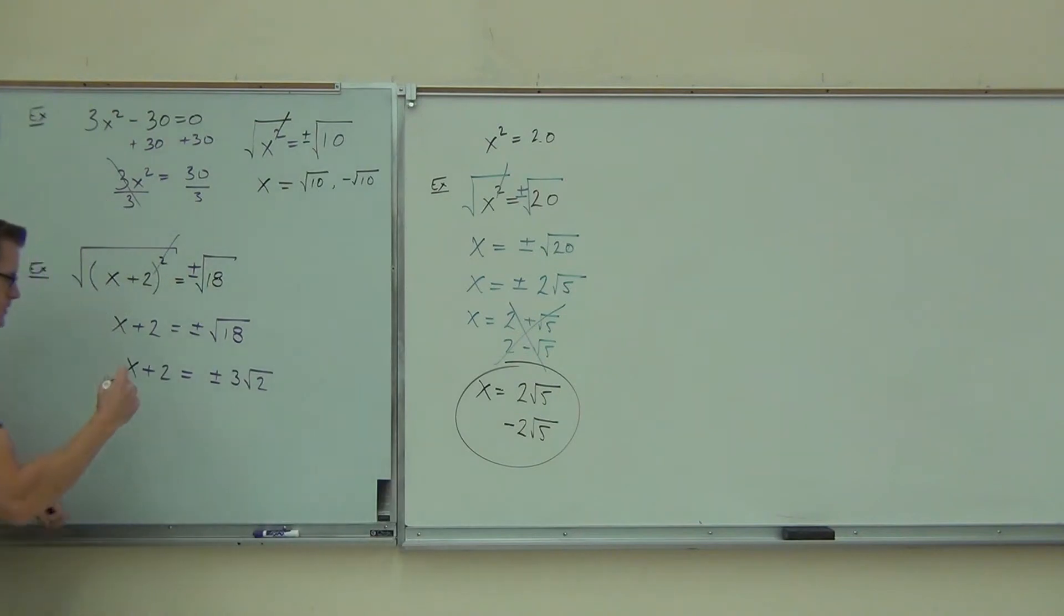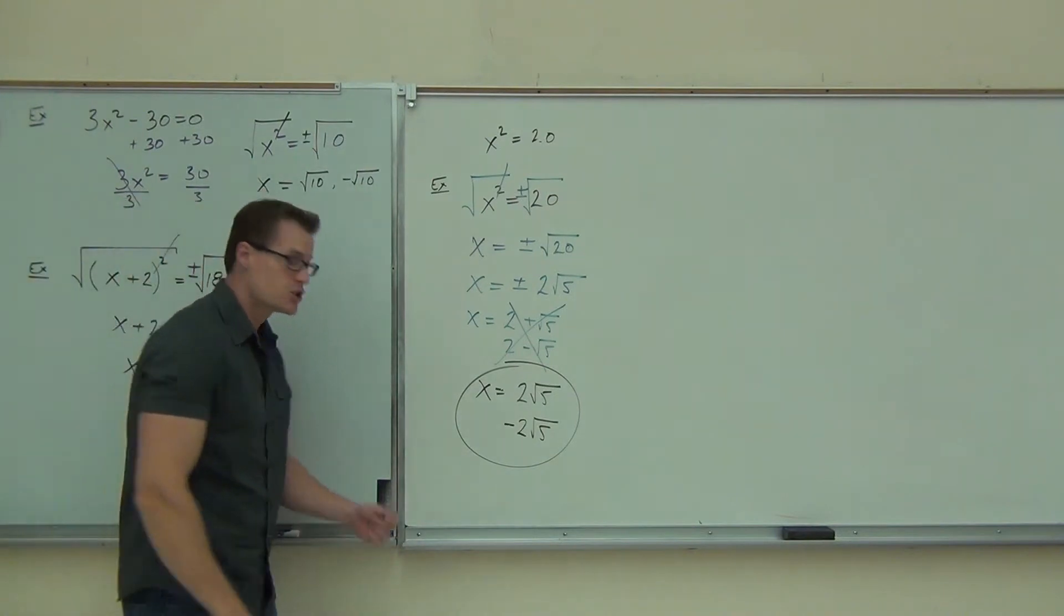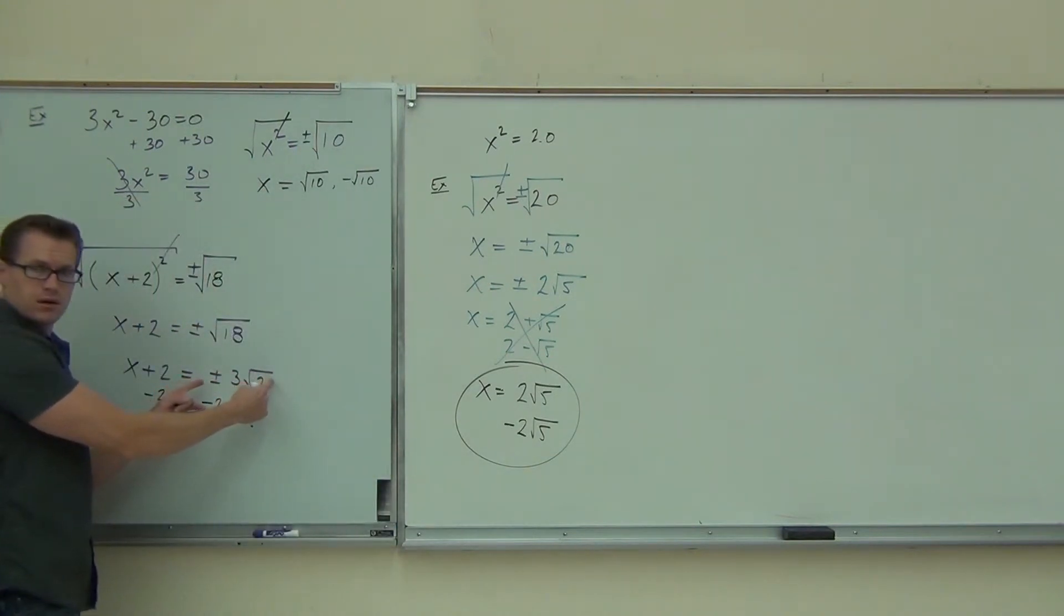We've got to get x by itself. Now, the problem is if I do subtract 2, where do I subtract 2 from? Can I do it from here? This has a root. This one doesn't. So I can't just subtract 2 from 3. That doesn't happen because this is 3 root 2, right? I would need a like radical to do that. I don't have one. I have an integer.